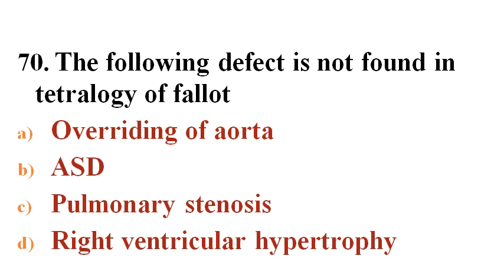Next question: The following defect is not found in tetralogy of Fallot. Options A. Overriding of aorta, B. Atrial septal defect, C. Pulmonary stenosis, D. Right ventricular hypertrophy.